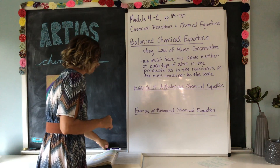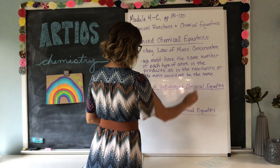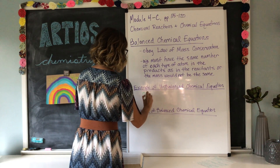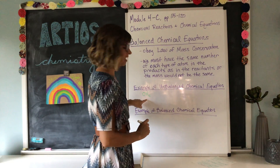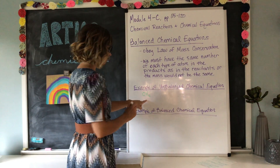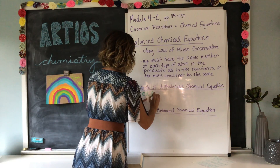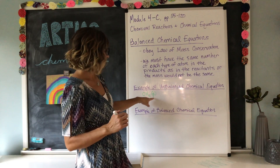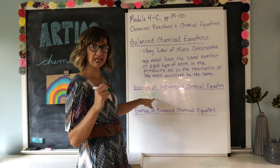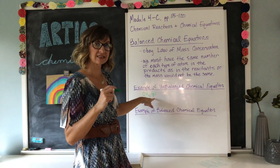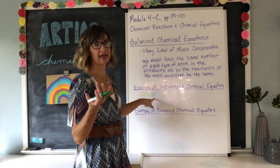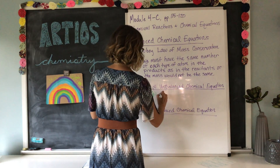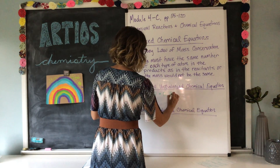Here is an example of an unbalanced chemical equation, starting with CH4. This is methane, and it exists in nature as a gas. When we are writing chemical equations, or you see them in your book, you may see in parentheses a G, an S, or an L, which tells you if it's a gas, a solid, or a liquid at room temperature. So we start with methane gas, plus oxygen, which is also a gas.